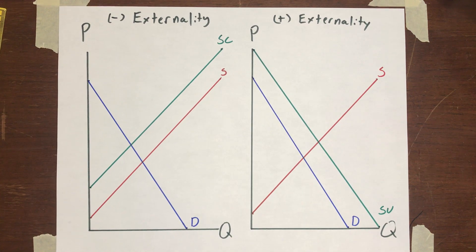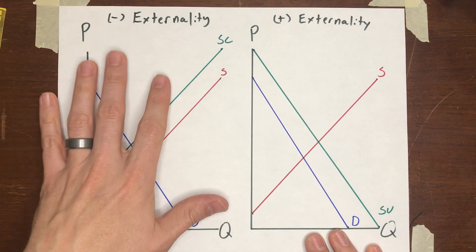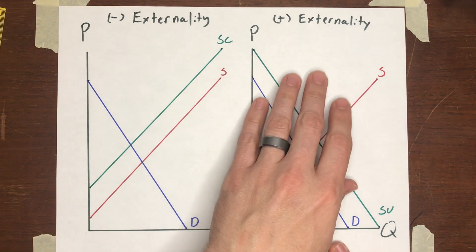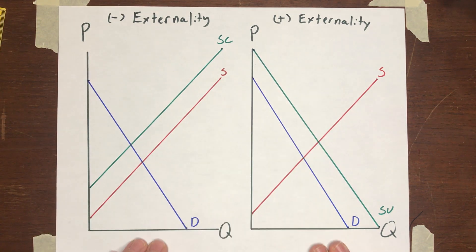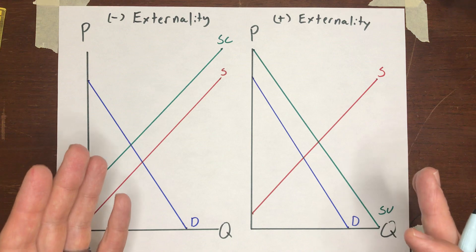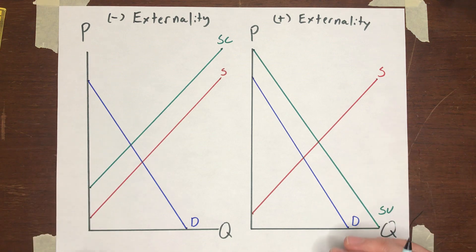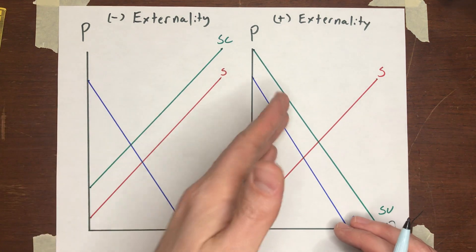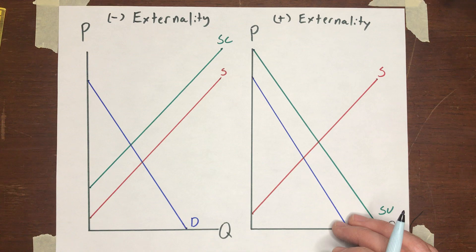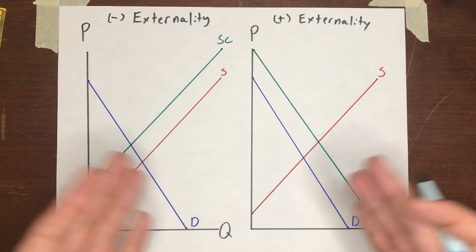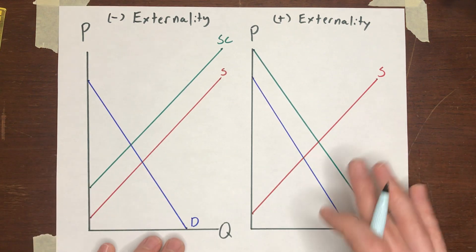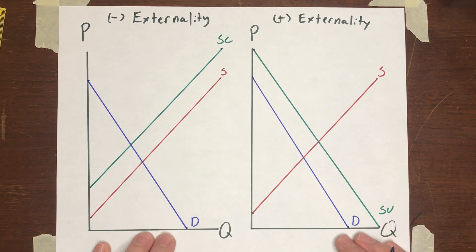Now let's think about externalities a little bit more formally with some graphical examples. On the left, I'm going to have a negative externality. On the right, I've got a positive externality. I want to put them side by side so we can compare them and see how similar they are. A positive externality is just the reverse of a negative externality, so you're going to see a symmetry in what shows up in these graphs.